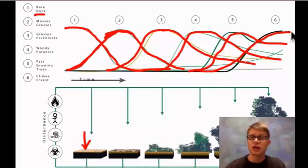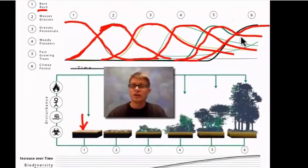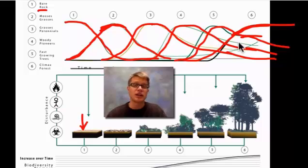This would be like the lodgepole pine and eventually we have some trees that come back like that. And so what happens eventually, everything kind of levels off and then we have these climax species at the end.